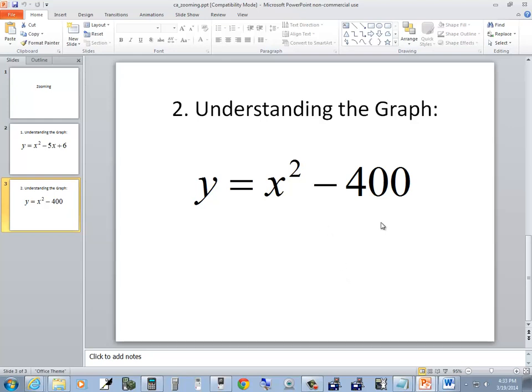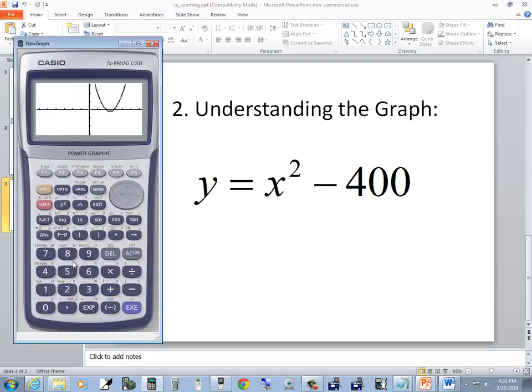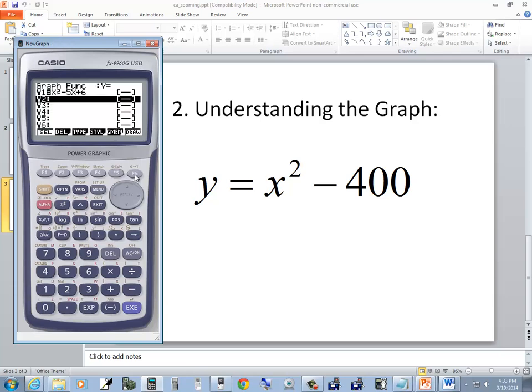Let's take a look at this one: Y is equal to X squared minus 400. Well, I want to go back to my, enter it in. So do shift, and then I want to do the F6. I'm going to up arrow to here and I'll type in my new function. So I'm going to do my X, then X squared minus 400, and then I'll push my EXE. And now if I do a draw, F6, we don't see anything.